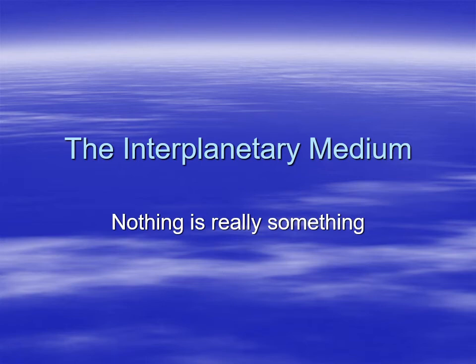We've covered all the planets in the solar system, the asteroids, the comets, and the moons. We've got meteoroids, we've got all that stuff. But not really — it turns out there's actually something between all the planets, something that we call the interstellar medium.